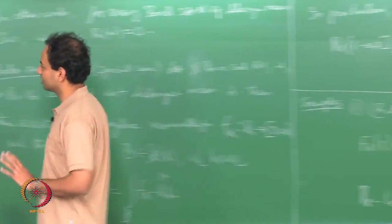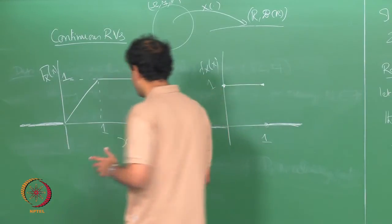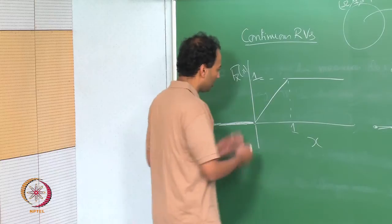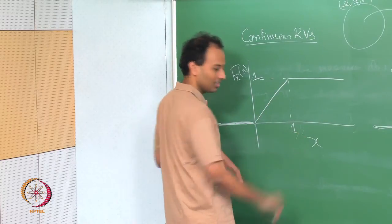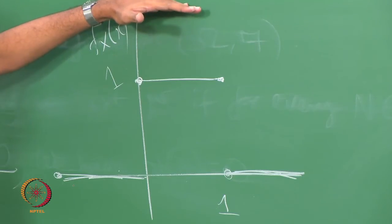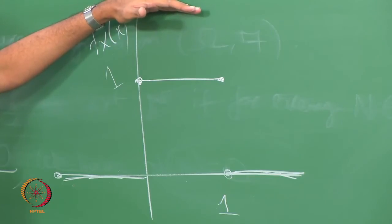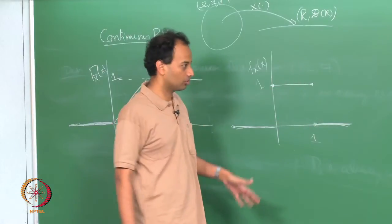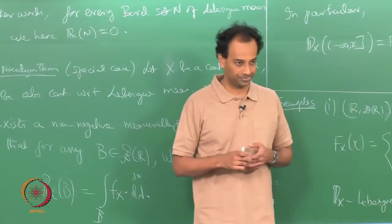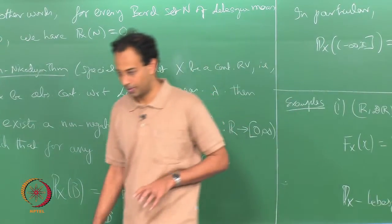I want to emphasize that the probability density function has no interpretation whatsoever in terms of probability by itself. It has the interpretation of probability only if you integrate it over a Borel set. For example, for a uniform measure on [0, 1/2], the density would be 2 on that interval. Do not pick off values from the PDF and say that is the probability — you have to integrate it to get probabilities.